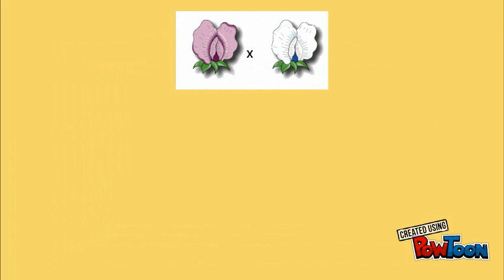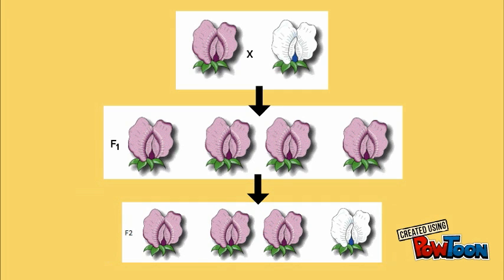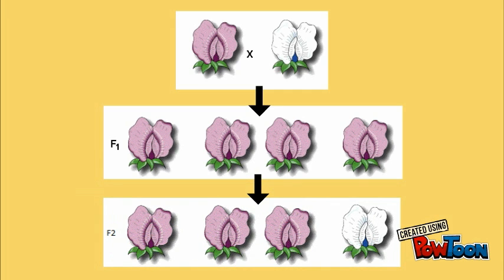When Mendel took a purple flower plant and crossed it with a white flower plant, all of the offspring had purple flowers. When he bred two of these offspring with one another, most of their offspring were purple. However, there were a few white flower plants as well.